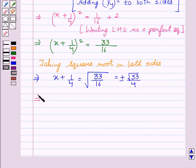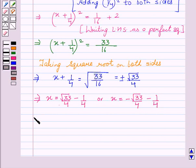This implies x = √33/4 - 1/4, or we can say x = -√33/4 - 1/4. This implies x = (√33 - 1)/4 or x = (-√33 - 1)/4.